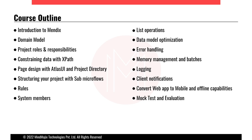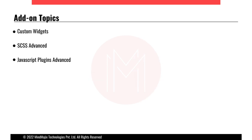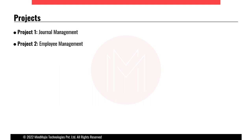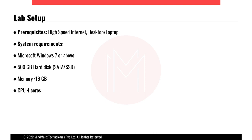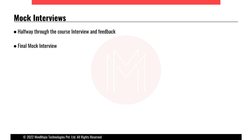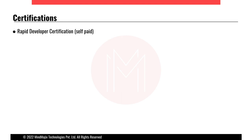That's pretty much it for the course outline. We'll go through custom widgets and how to customize them according to requirements. For projects, we'll cover two applications — general management and employee management as small applications built together in the labs. We'll also go through certifications: rapid developer is the starting level, then intermediate, then advanced, and then expert. Mendix has four certifications total.